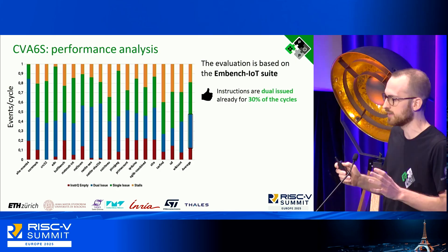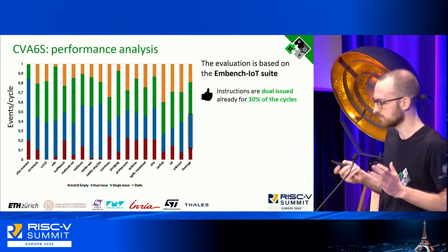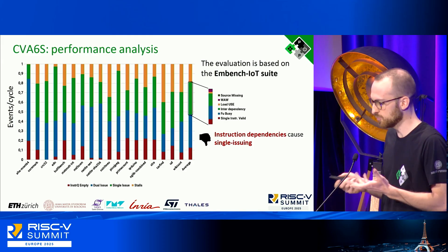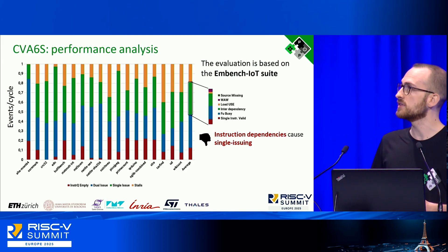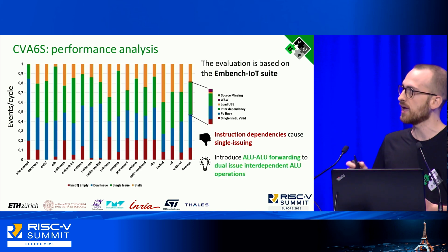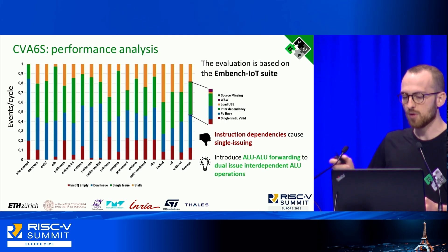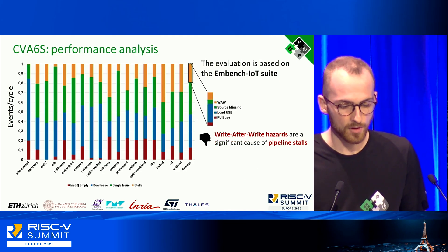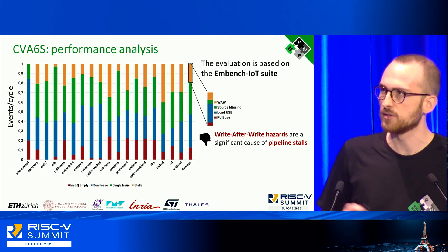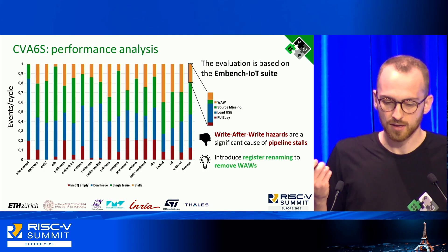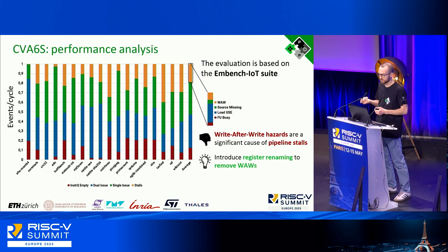We are already dual-issuing in 30% of cycles — the optimal scenario for a dual-issue superscalar core — but in a similar number of cycles we are single-issuing. The main reason in this case is instruction dependencies. Since many dependencies are between ALU-to-ALU operations, we can add combinational forwarding between the two functional units. Lastly, a non-negligible reason for stalling is write-after-write hazards — false dependencies — so the textbook solution is adding a renaming scheme.